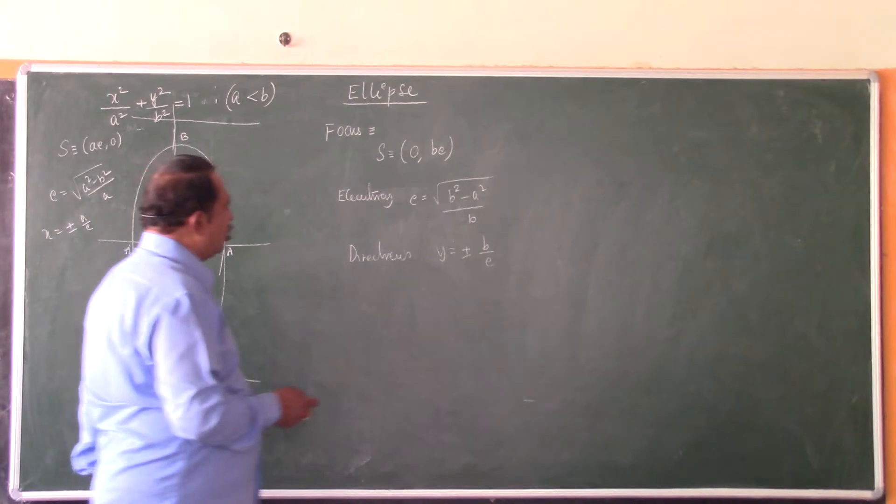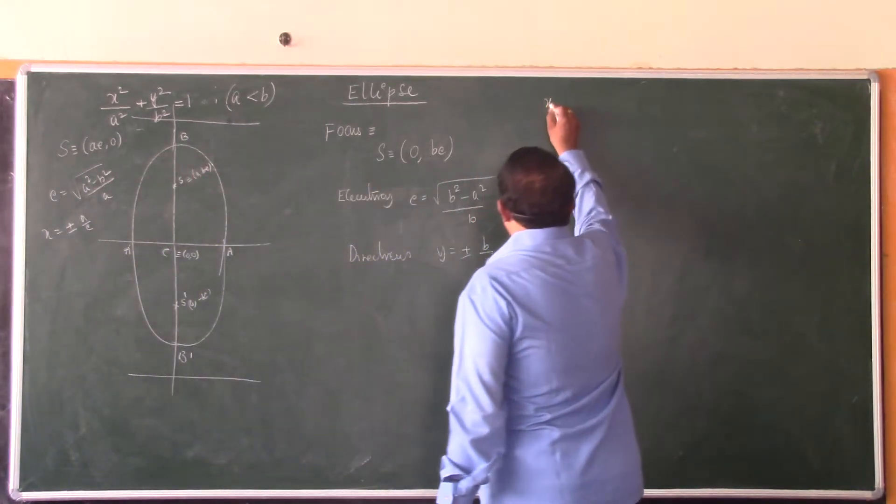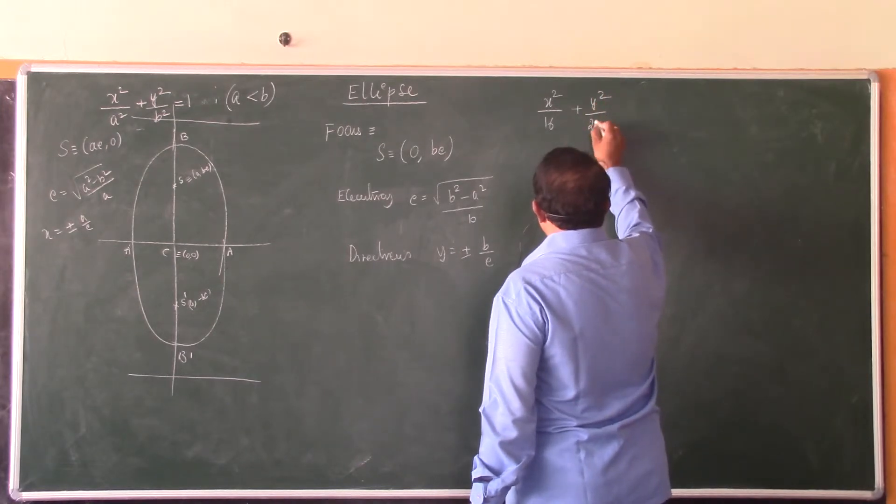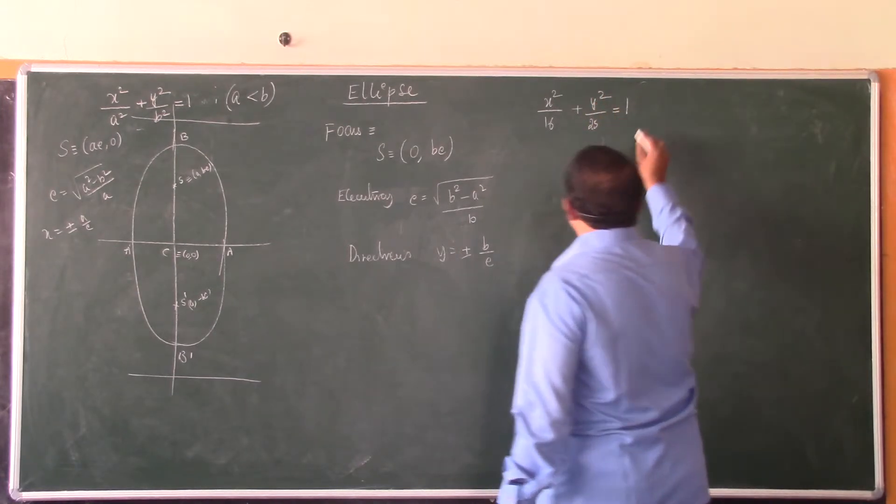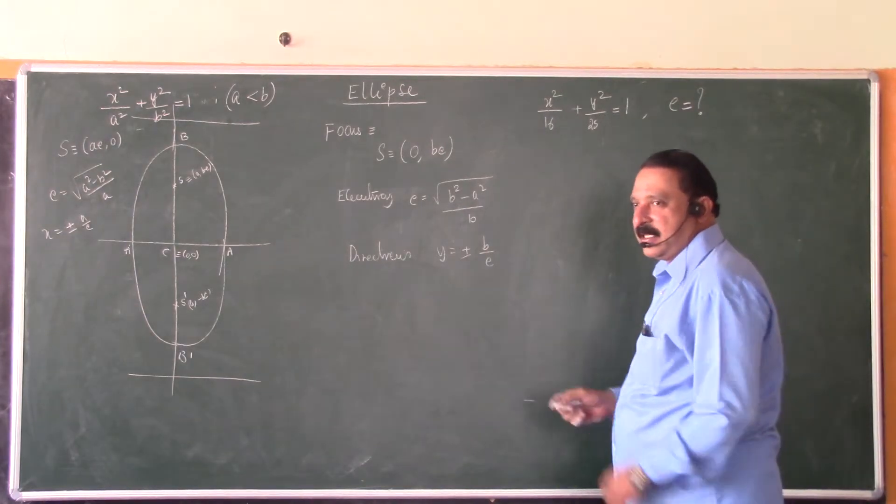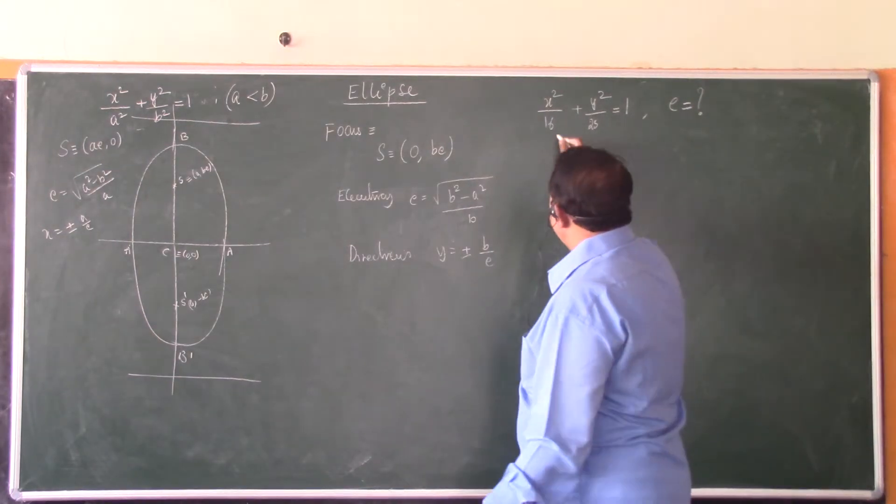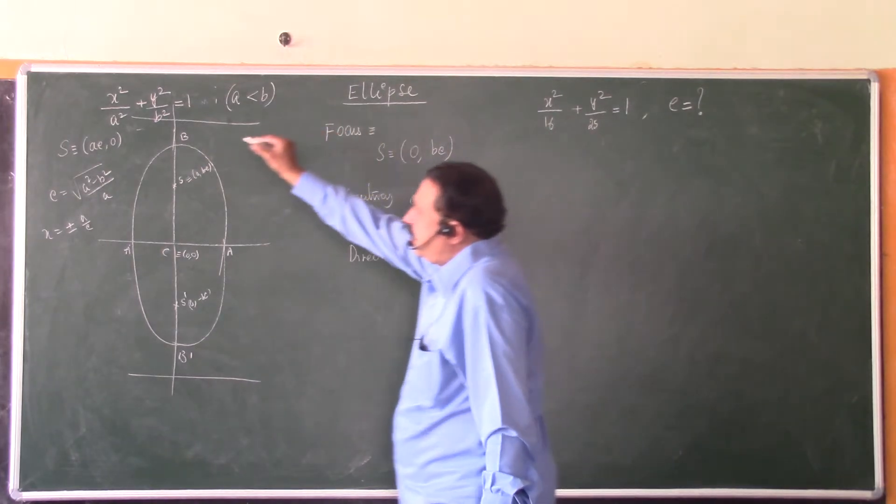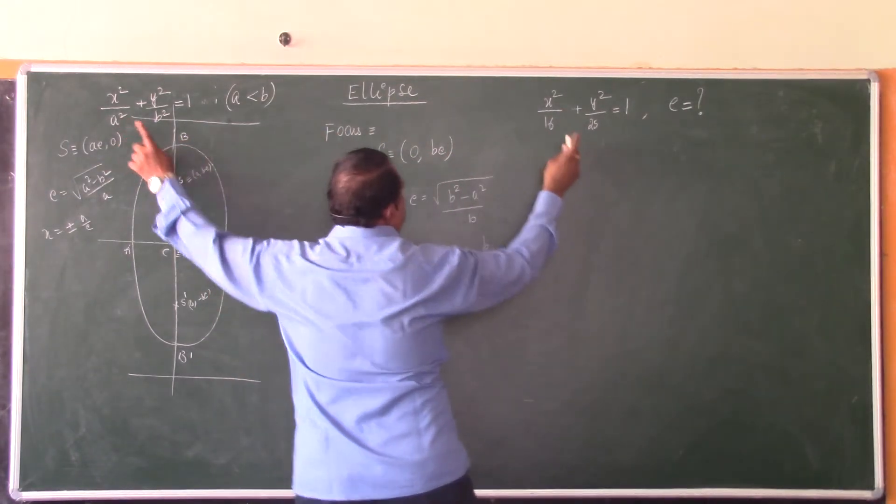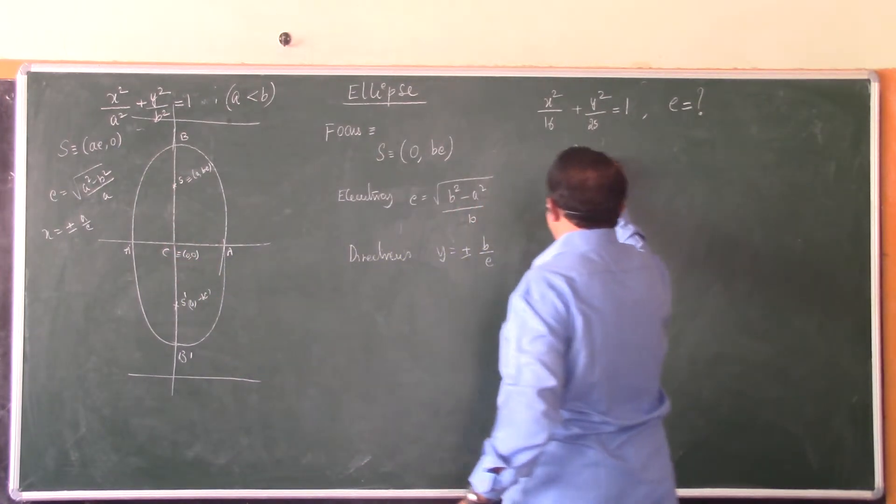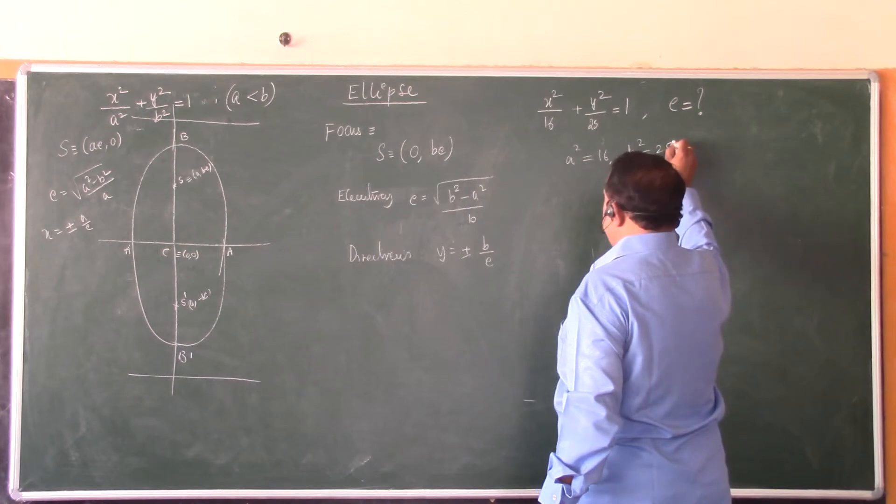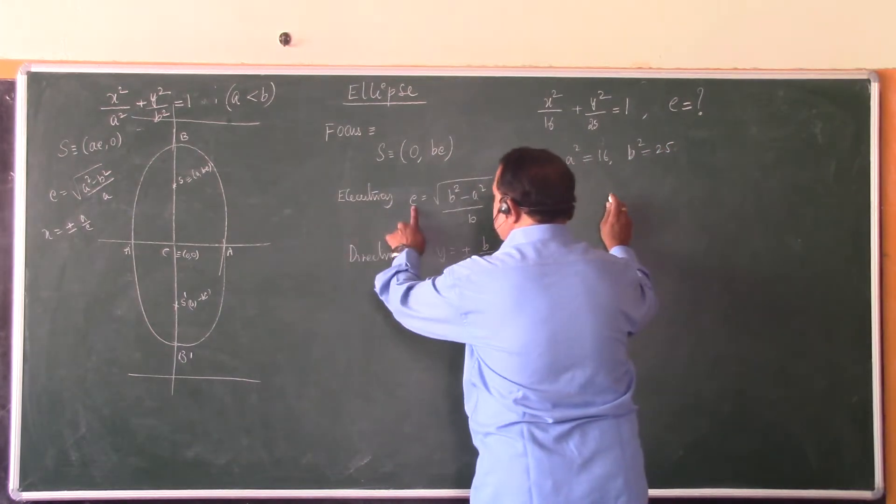For example, for the ellipse x² by 16 plus y² by 25 equals 1, the eccentricity is, what is the value of the eccentricity? You compare this given equation with the standard form. What is the value of a² you see here? a² equals 16 and b² equals 25. And you want to find eccentricity.